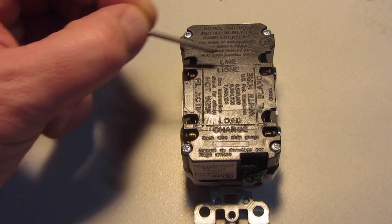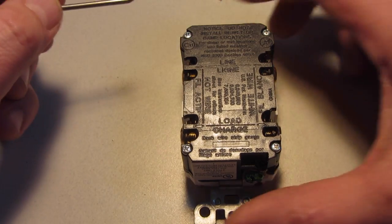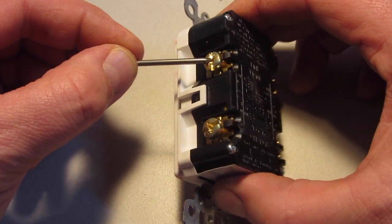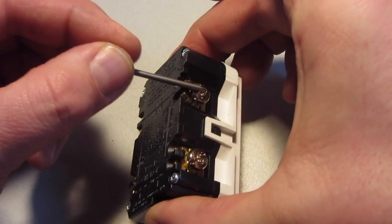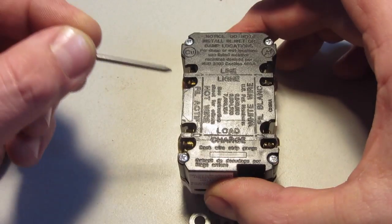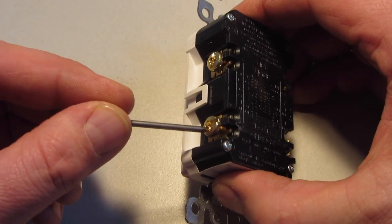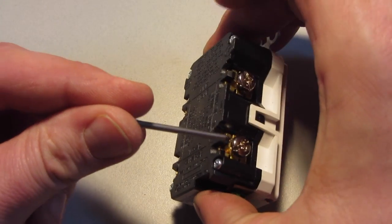The line is pointing to both sides where you have screws, a gold and a silver. The load does the same thing. It points to a gold and a silver.